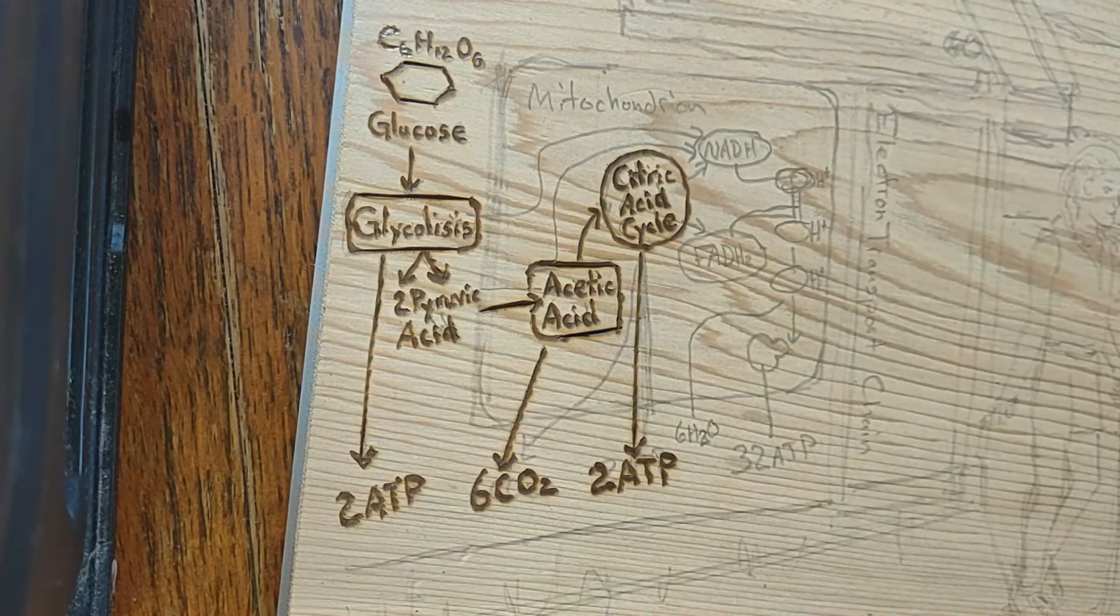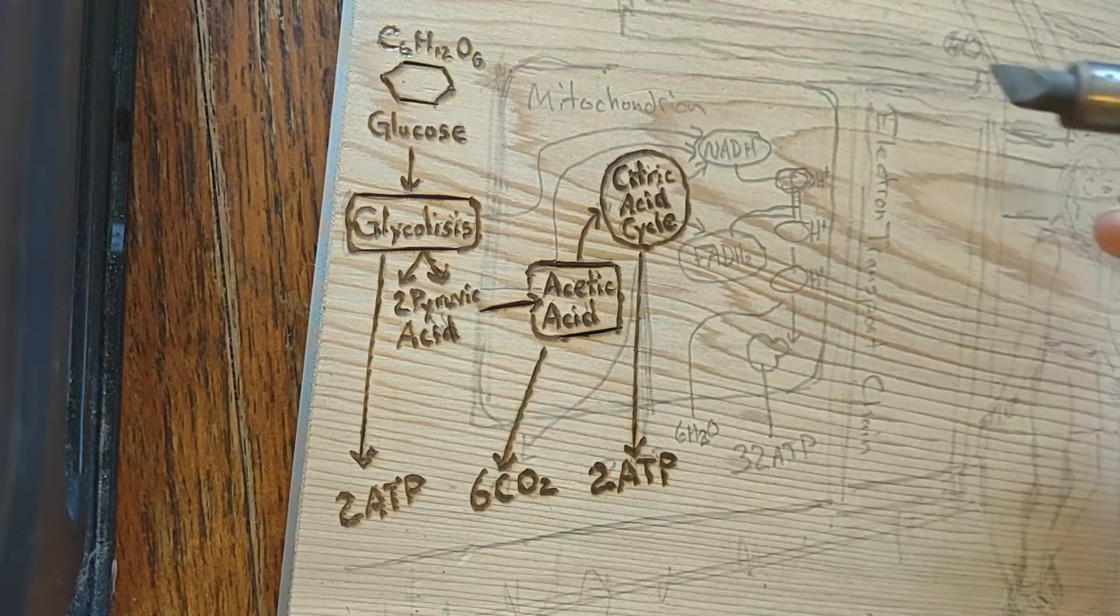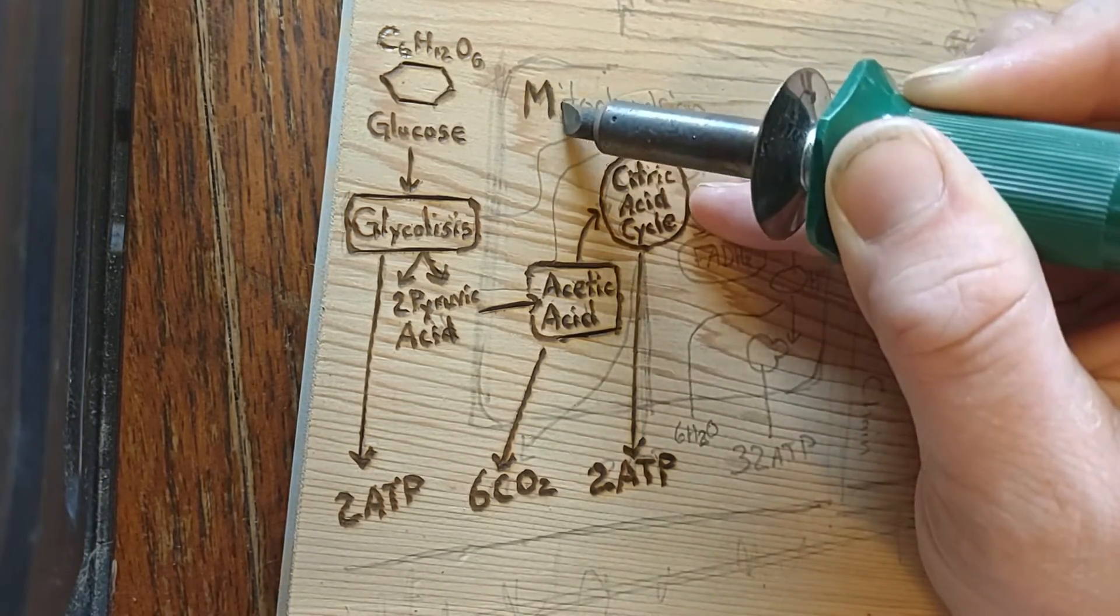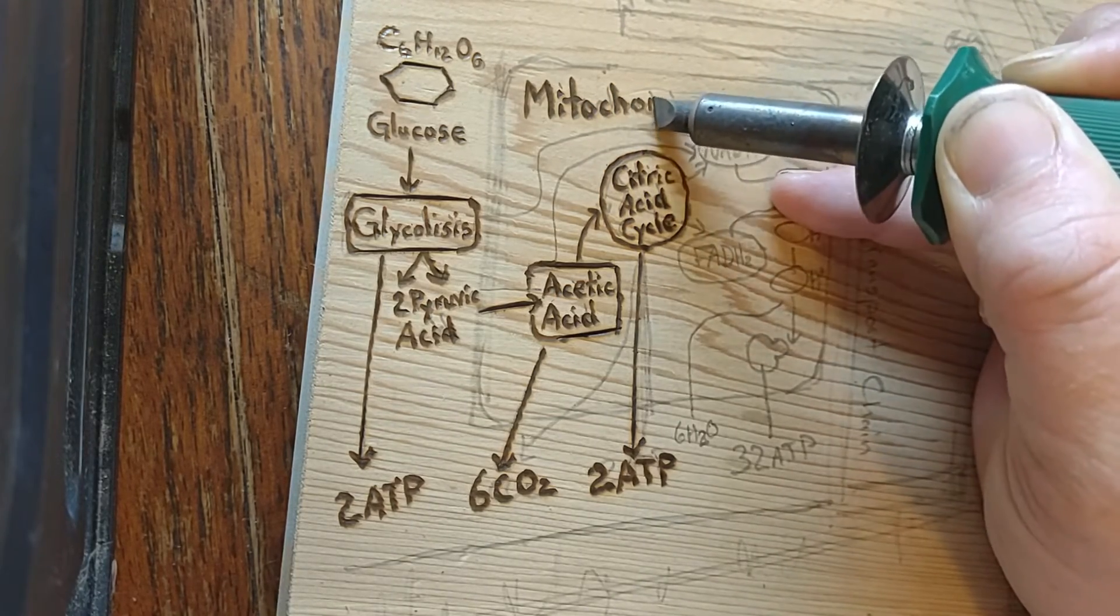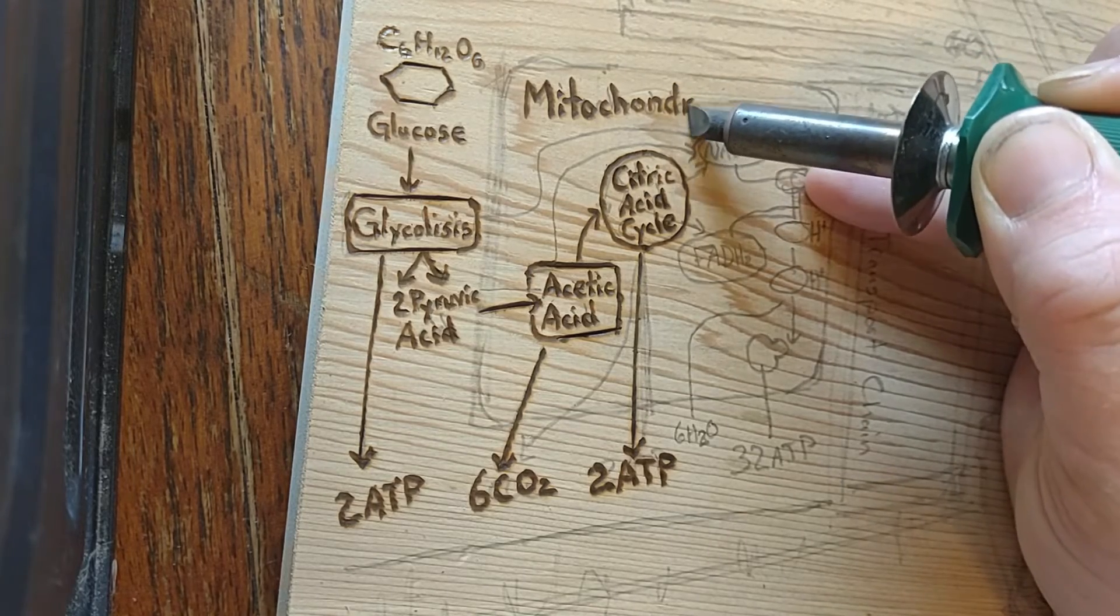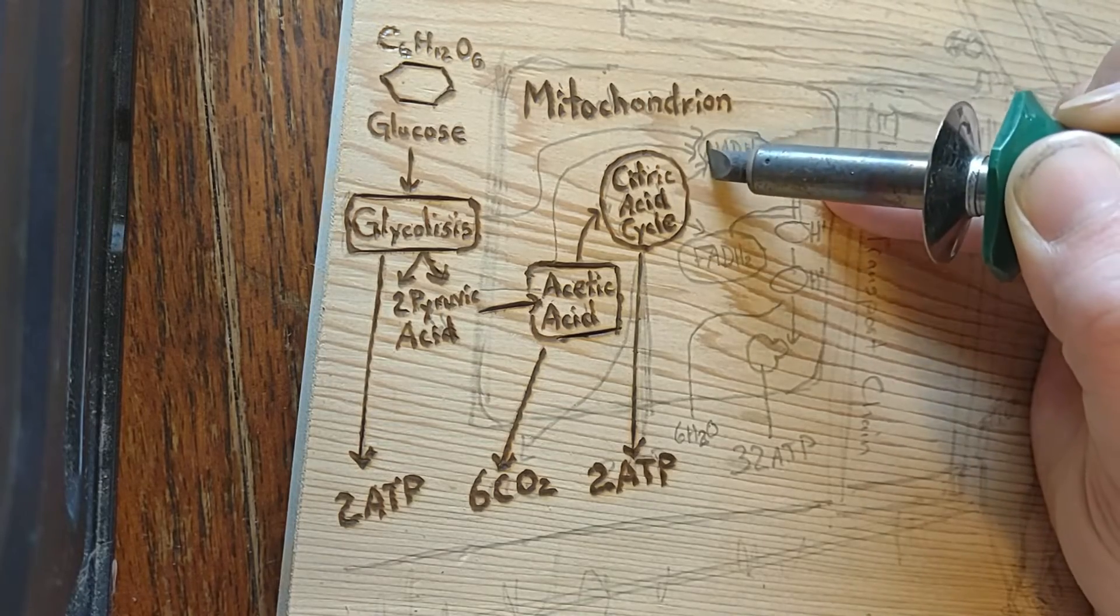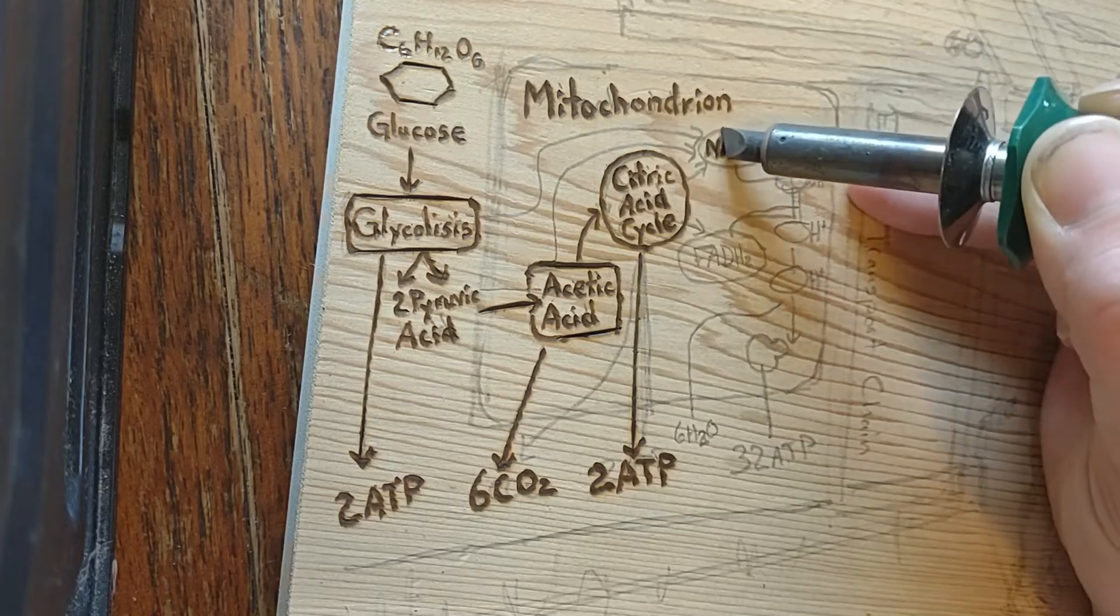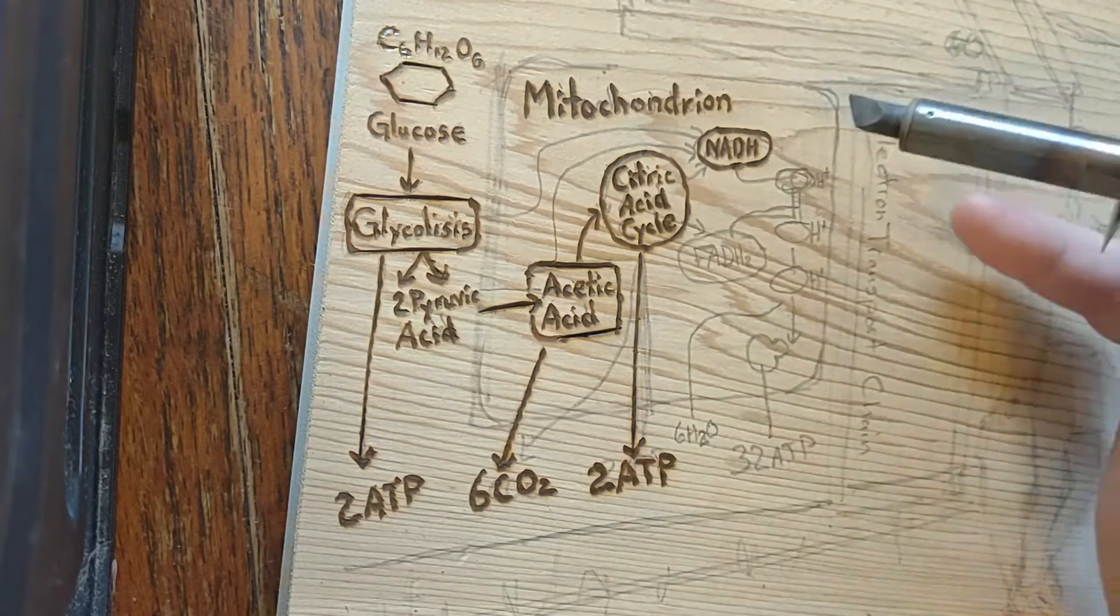The citric acid cycle, also known as the Krebs cycle, is when oxygen is present, acetyl-CoA is produced from the pyruvate molecules created from glycolysis. Once acetyl-CoA is formed, aerobic or anaerobic respiration can occur. When oxygen is present, the mitochondria will undergo aerobic respiration, which leads to the Krebs cycle.